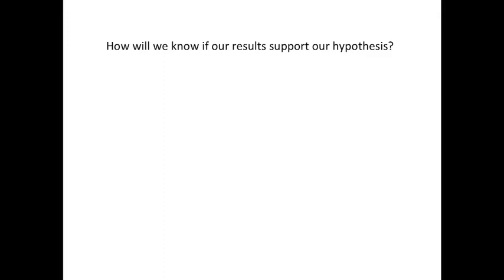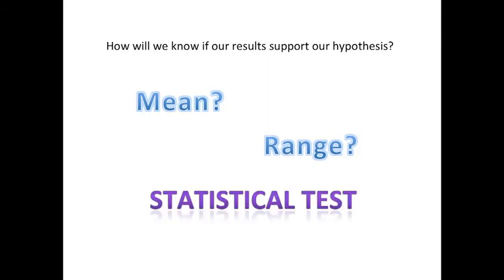We can do this in different ways. We can look at the mean, but of course there's problems with the mean in terms of outliers. We could use the range, which gives us a better idea, but it has its disadvantages. What we really need to do is use a statistical test, and this is where the Wilcoxon comes in.